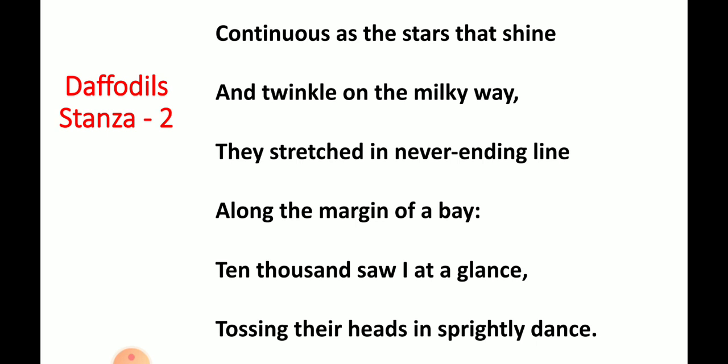Ten thousand saw I at a glance — hyperbole is used. Continuous as the stars that shine — simile is used. There are three different figures of speech used in stanza number 2. The stanza is six-lined and it is called a sestain. This was all about stanza number 2. If you have any doubts, you can ask later. Thank you very much.